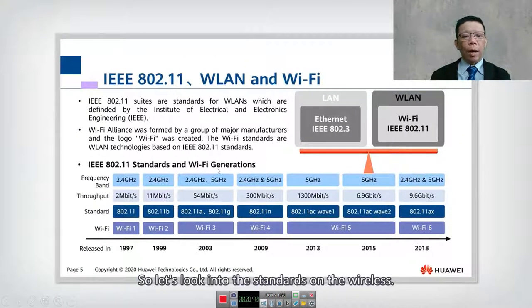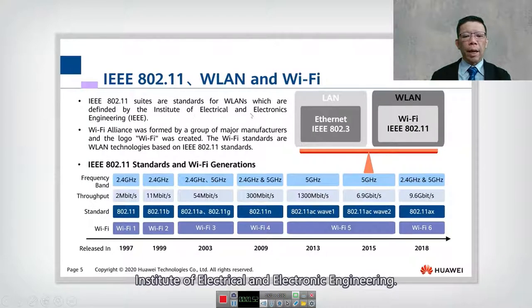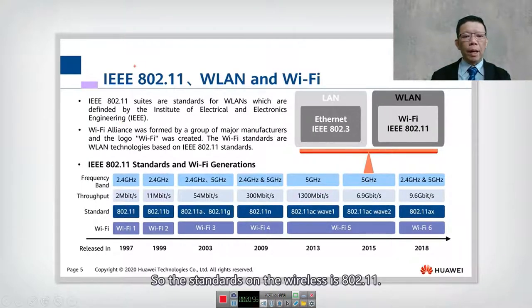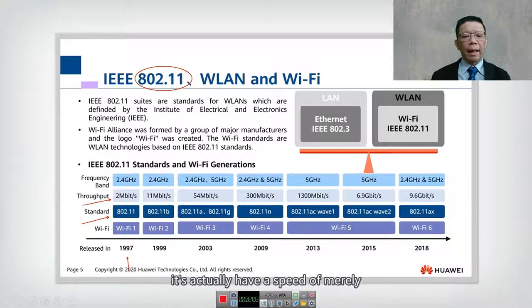The standard for wireless is IEEE 802.11, also known as WLAN and Wi-Fi. IEEE stands for the Institute of Electrical and Electronic Engineering. The 802.11 standard started in 1997 with a speed of merely 2 megabits per second, operating at 2.4 gigahertz.